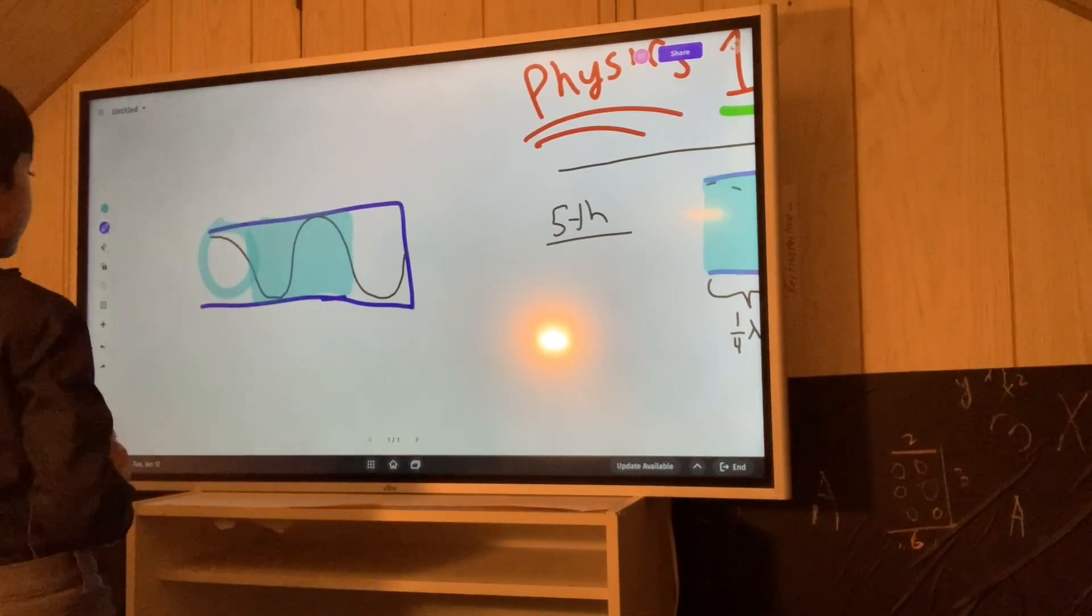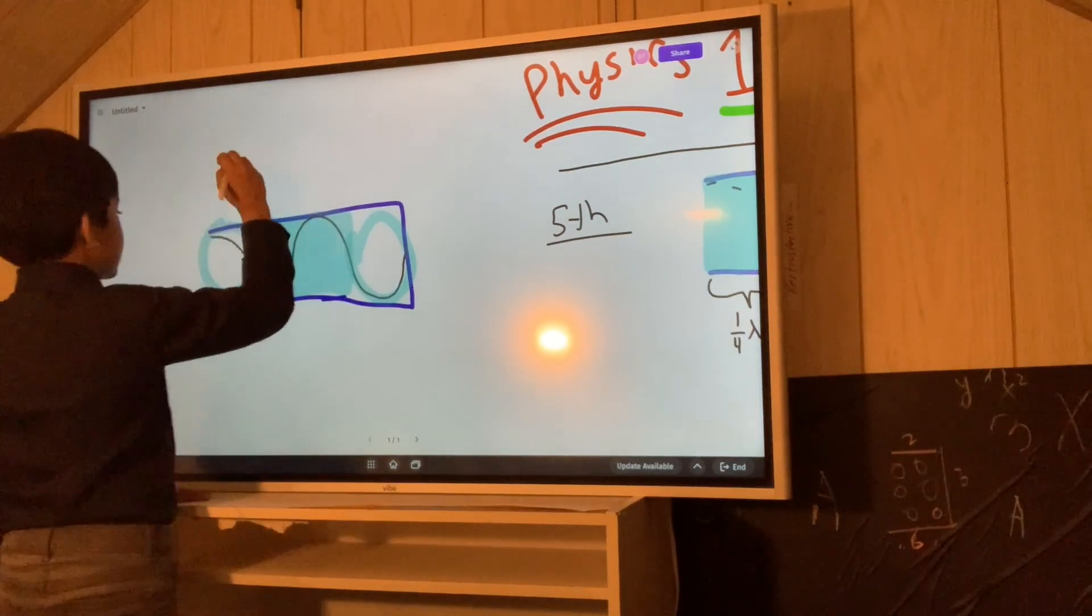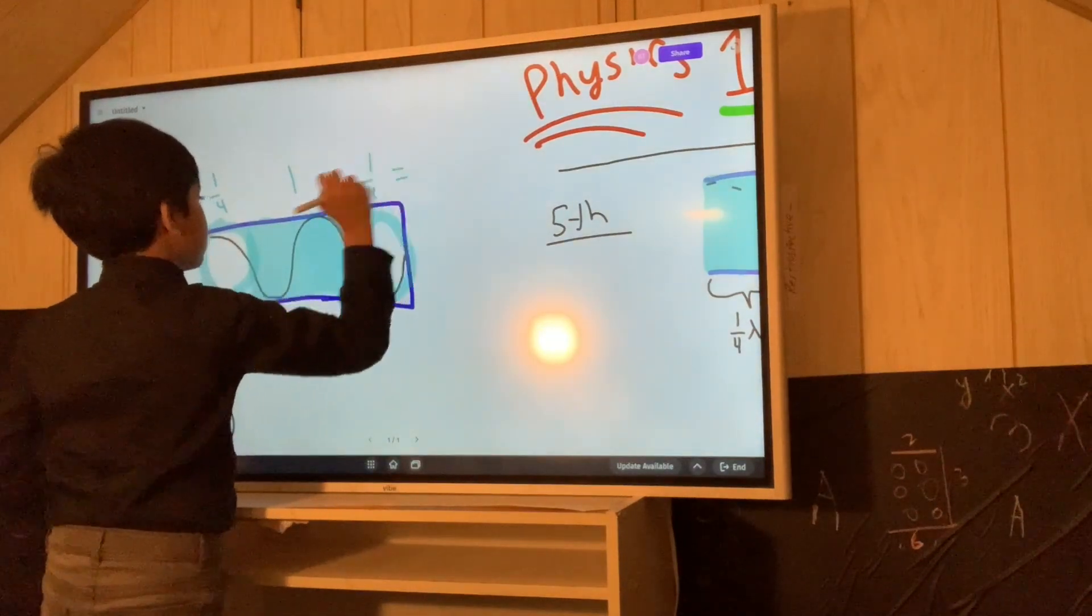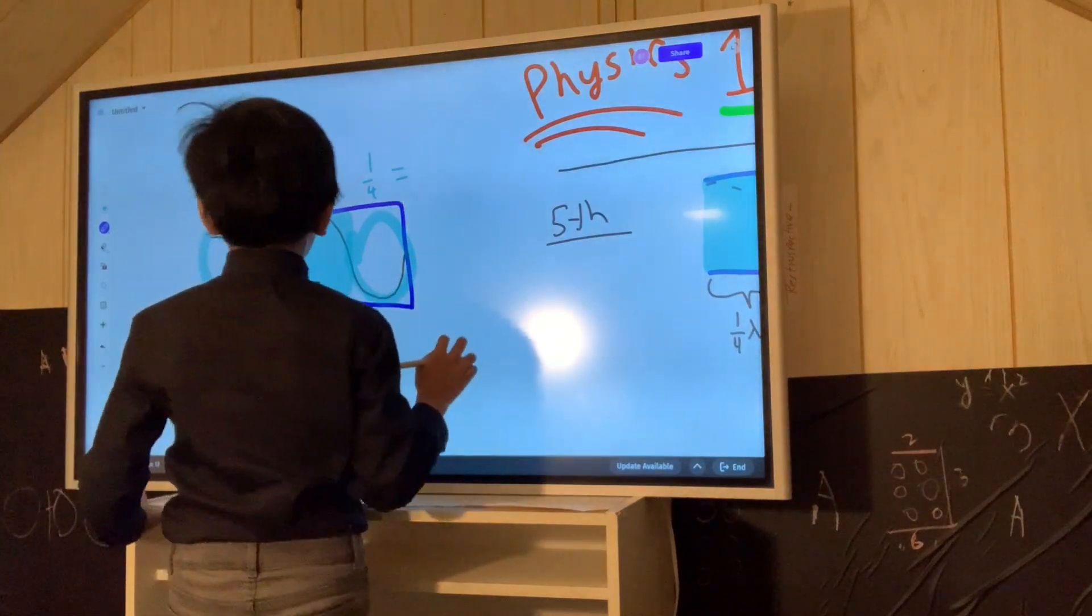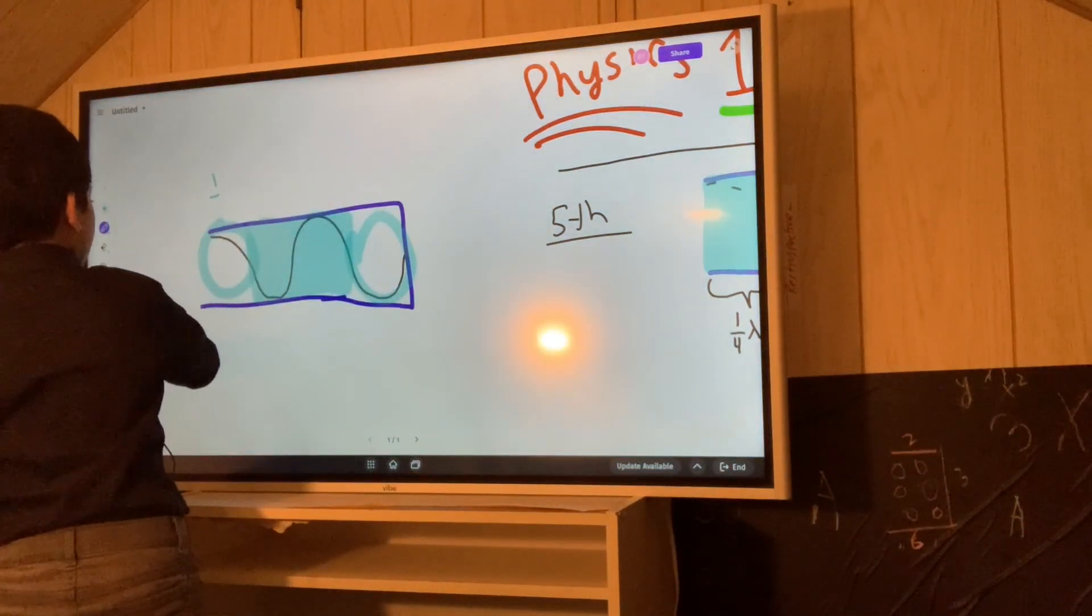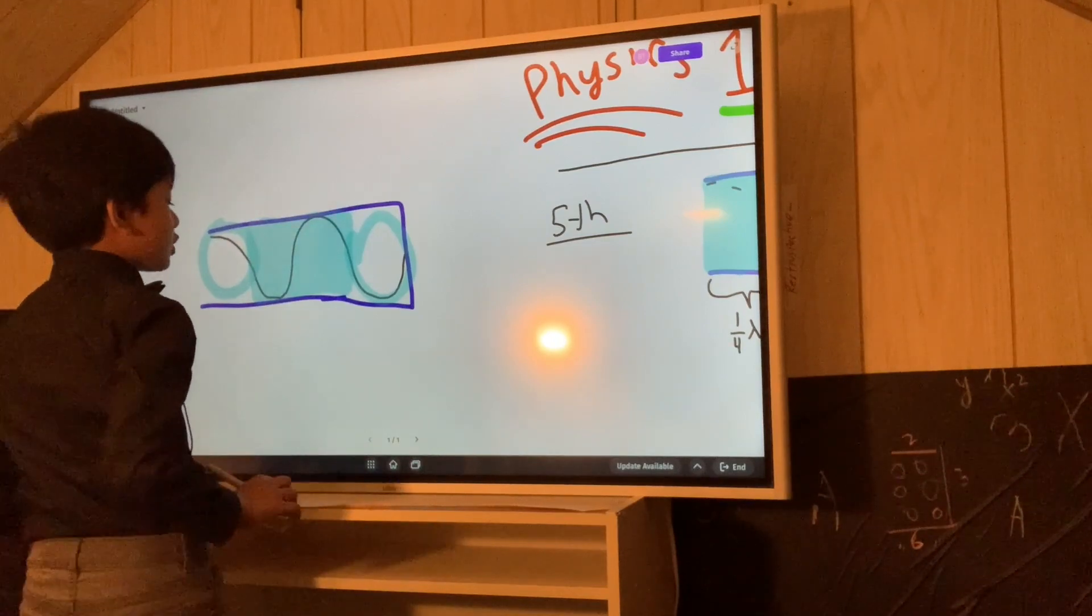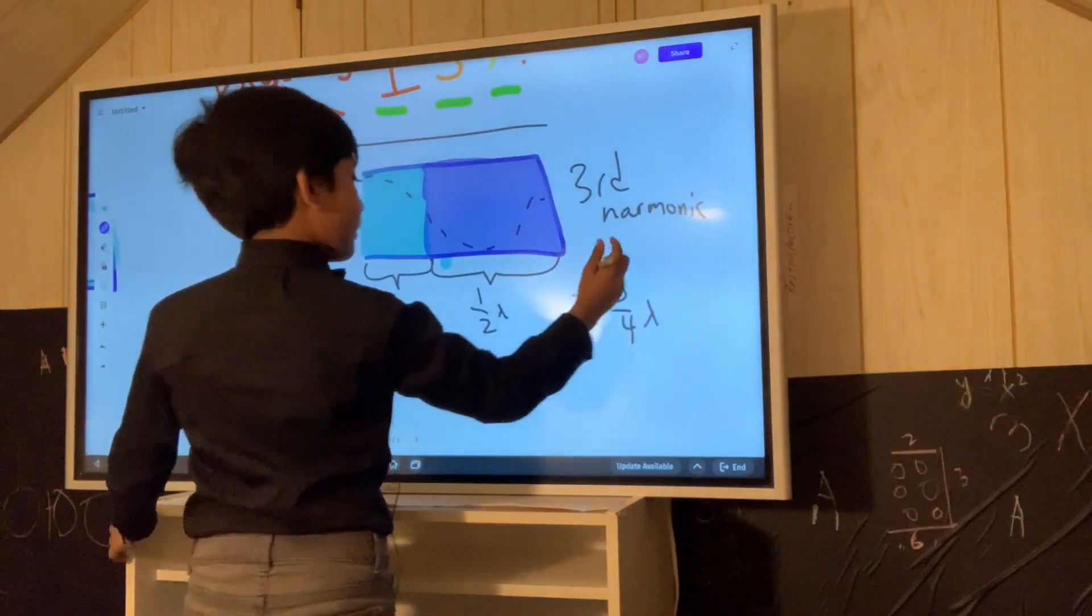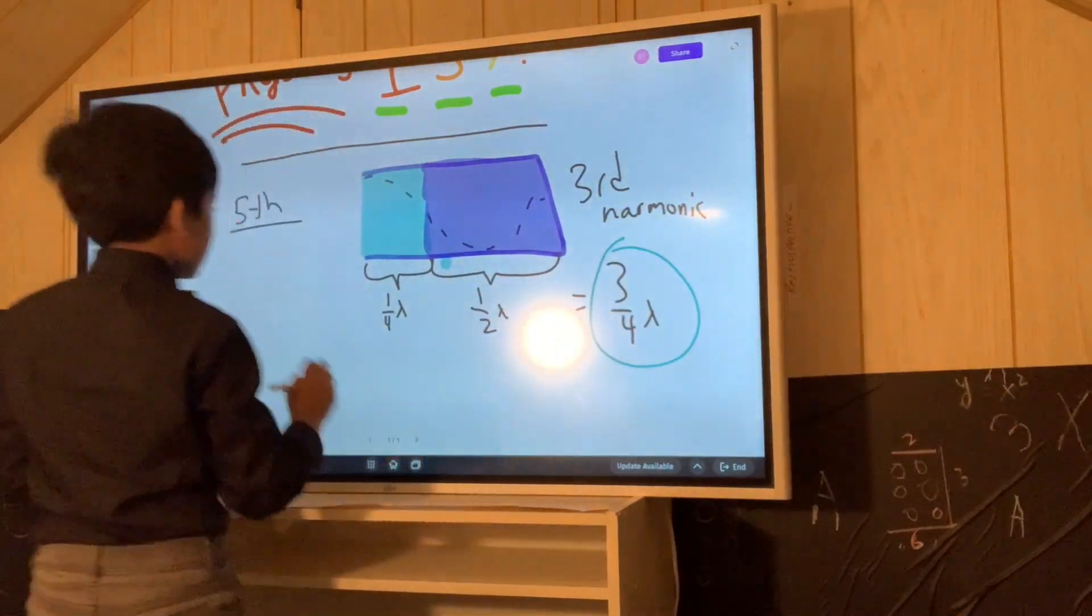And then, you have another one-fourth here. So you can see one-fourth, one, one-fourth. Which goes in the making of our five-fourths of lambda. So if we have five-fourths here, then what are we going to do? Well, if third harmonic was three-fourths, then fifth harmonic must be five-fourths lambda, of course.